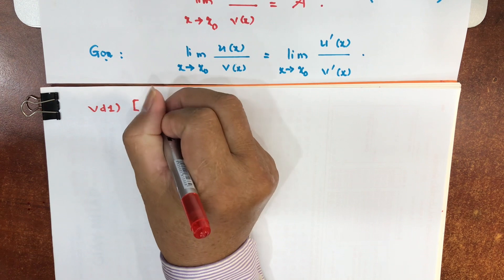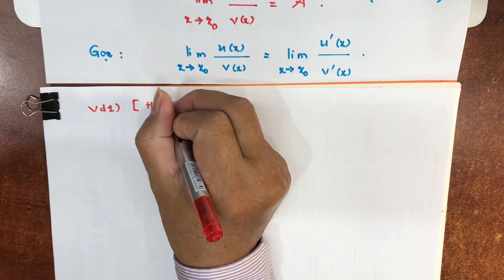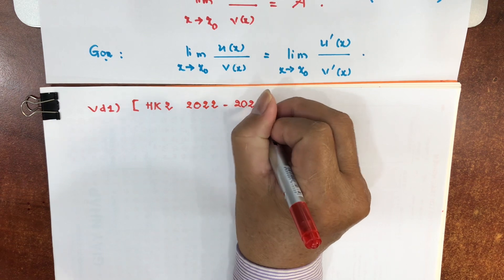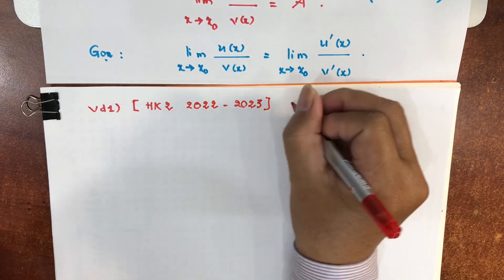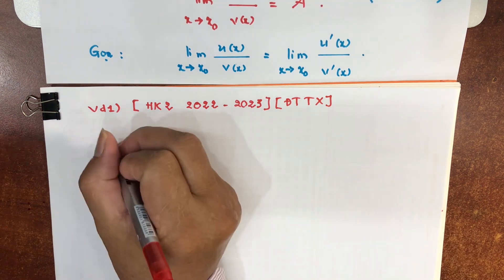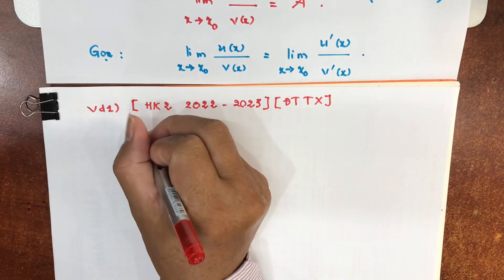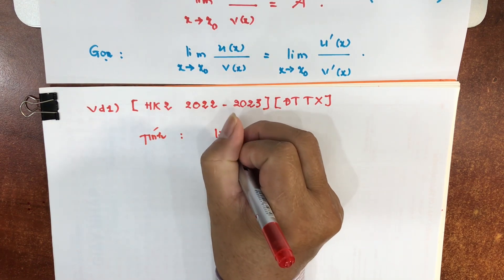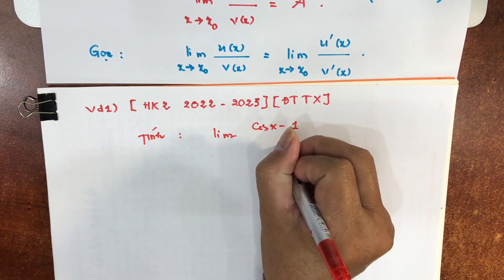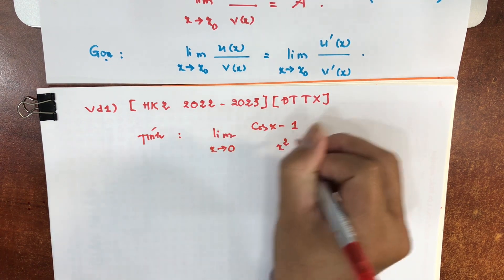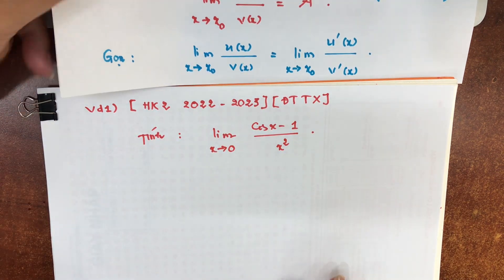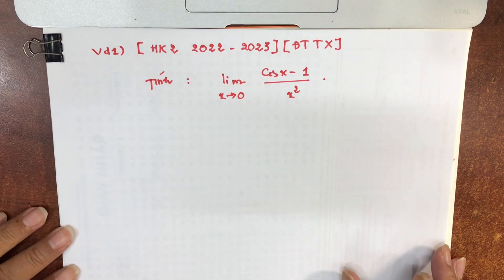Gần nhất ở đây có nghĩa là học kỳ 2 — mình đang học kỳ 1 năm 23-24, thì gần nhất là học kỳ 2 năm 2022-2023. Đó là đề thi của hệ đào tạo từ xa. Đề bài: tính lim của (cot x - 1)/x² khi x tiến về 0.